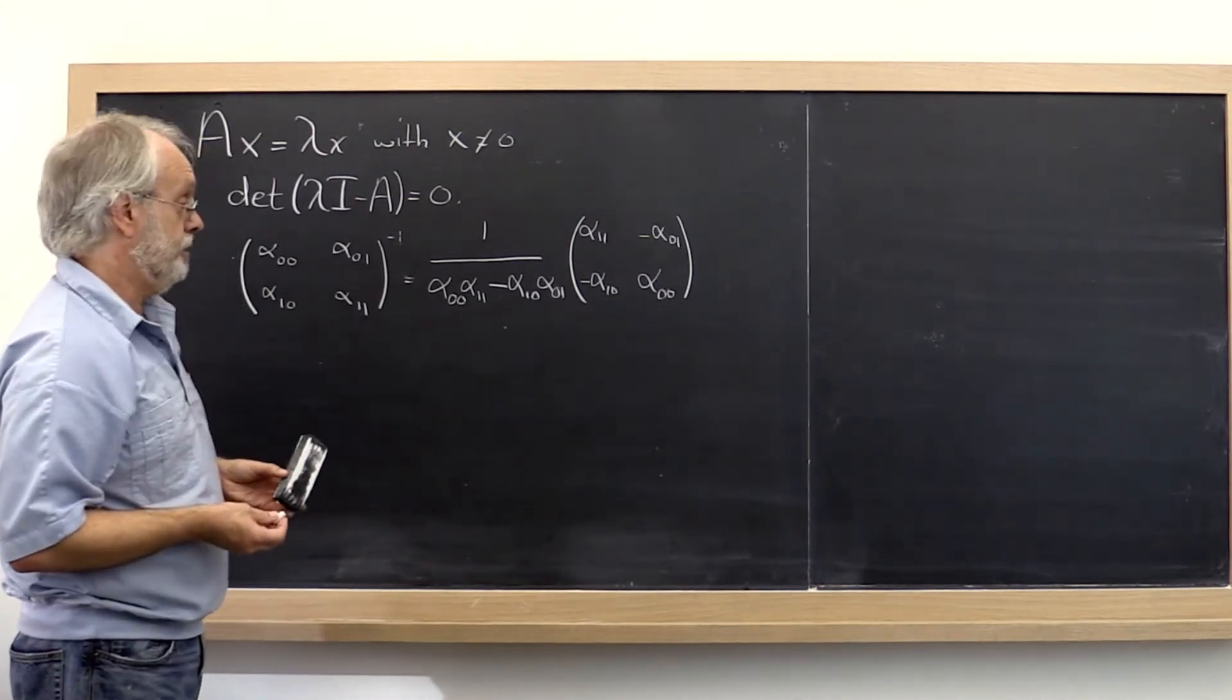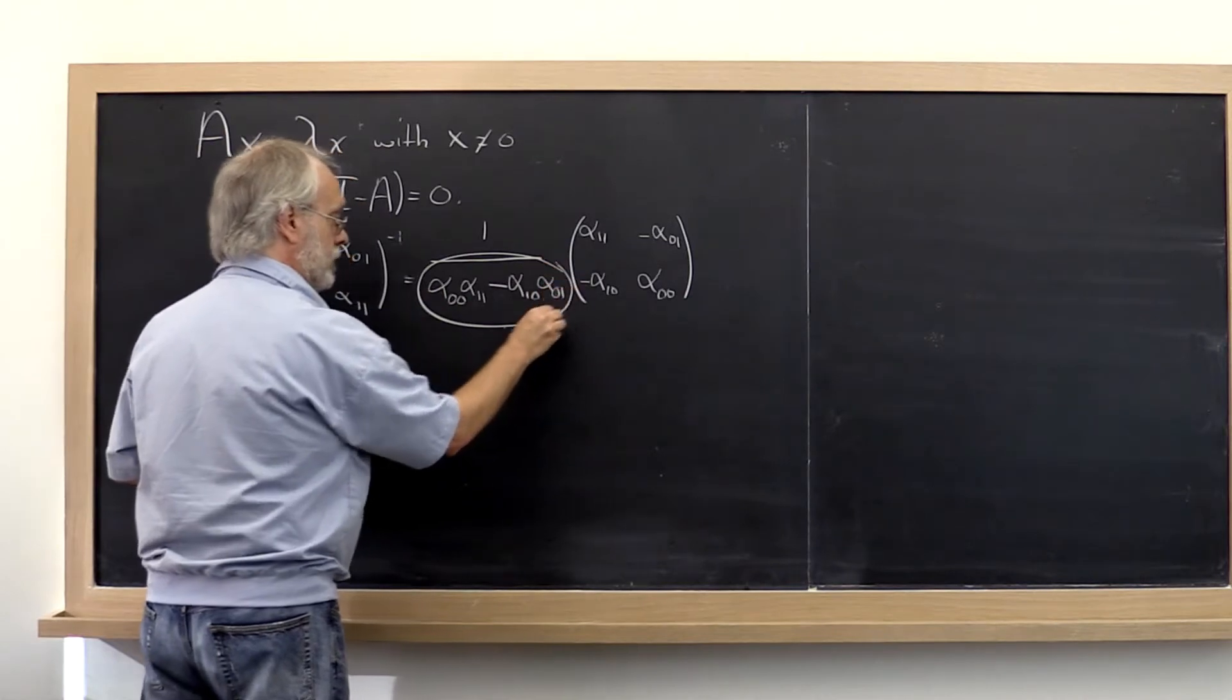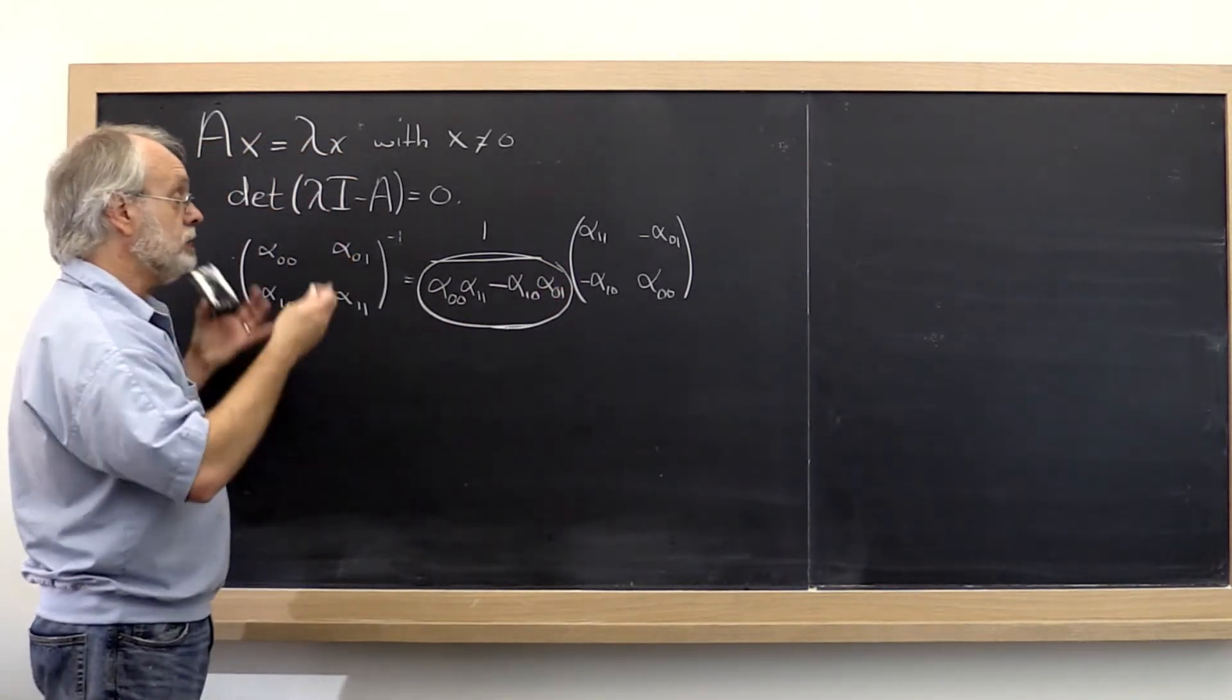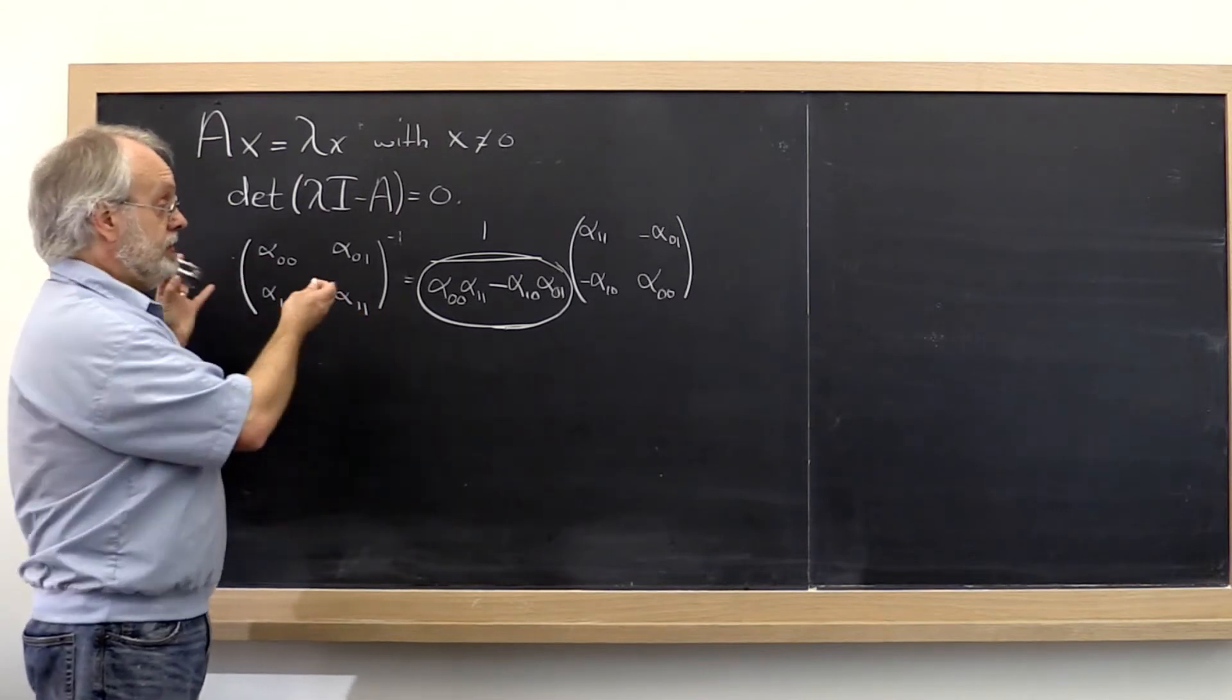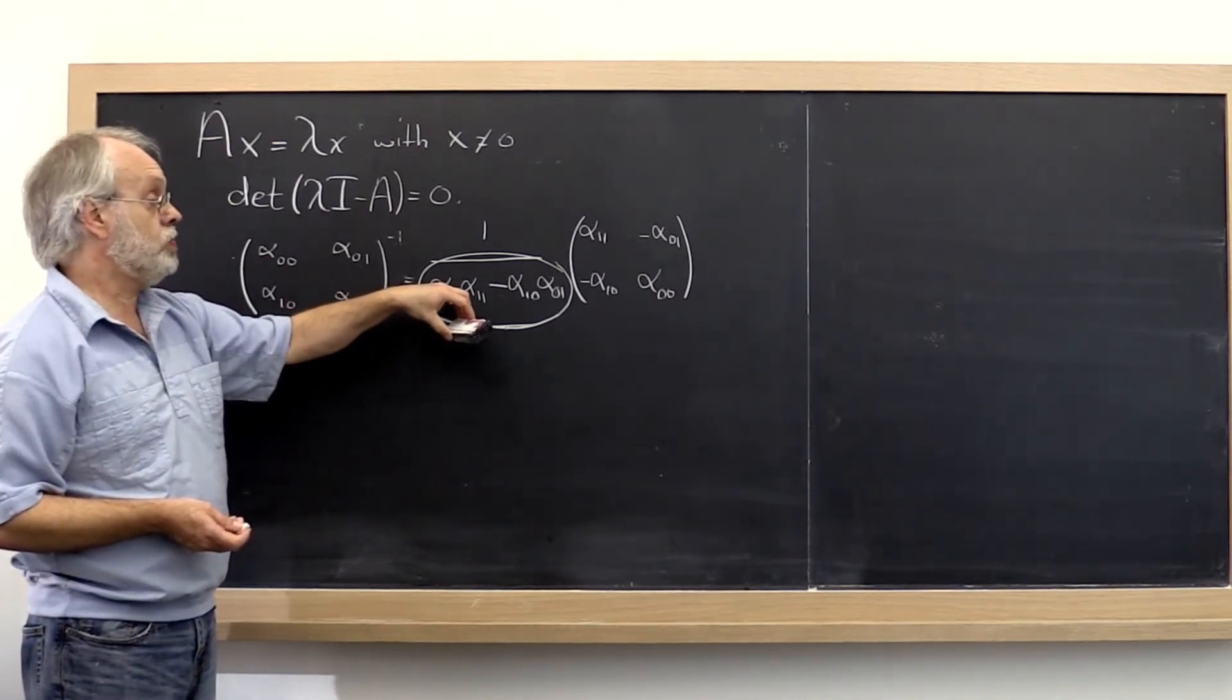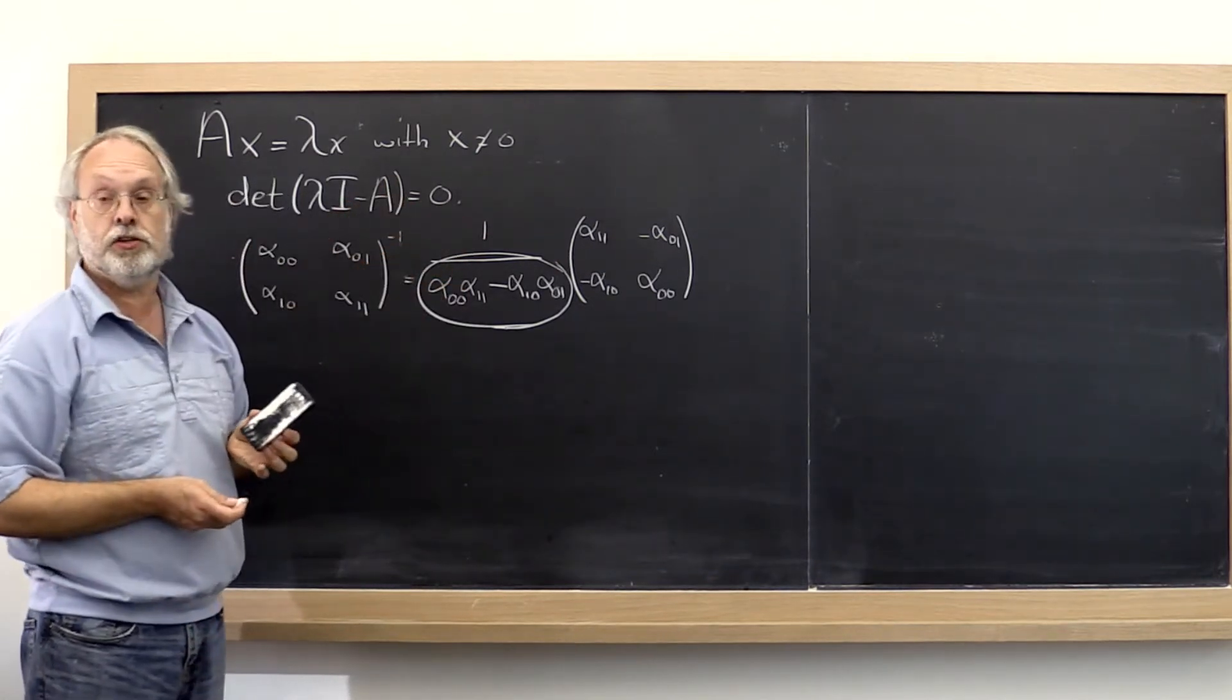Anyway, the key here is that this quantity right here tells you whether this formula yields a matrix that is the inverse. If this is non-zero, then we know that we have a formula for the inverse.